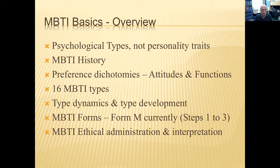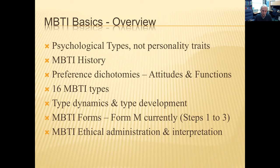Isabel went on to marry someone very different from her in psychological type, and published a couple of mystery novels. But then World War II happened, and Isabel and her mother were very concerned about Hitler and fascism. Isabel devoted herself to further developing her mother's instrument to help the world appreciate differences rather than judge them. She originally called it the Briggs-Myers Type Indicator, but BMTI didn't have a good connotation, so she switched it around to MBTI.